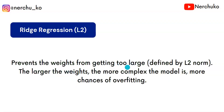Ridge Regression prevents weights from getting too large by assigning smaller values. Suppose we have an unimportant feature with a weight of 32. After optimizing the cost function with Ridge, that weight is reduced to something like 0.03. So we add a small penalty to control the weight magnitude.